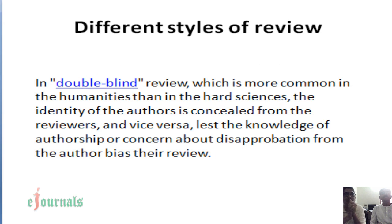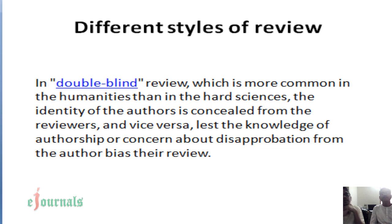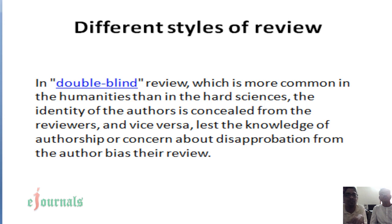There are different types and styles of review process. In double blind review, the author will not know who the reviewers are, and the reviewers will not know who the authors are. In other words, both parties will not know each other, and therefore the review will be very objective. There won't be any author bias and there won't be any reviewer bias. The humanities division relies on double blind review a lot more than the hard sciences.